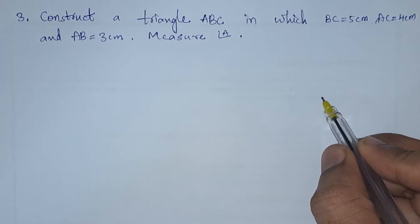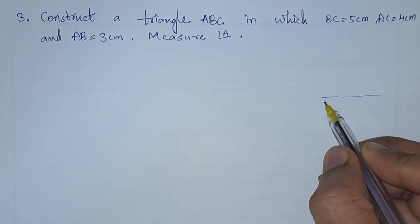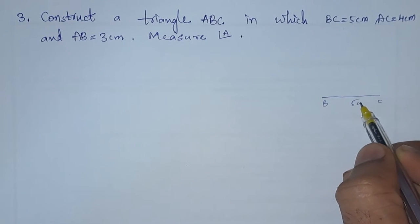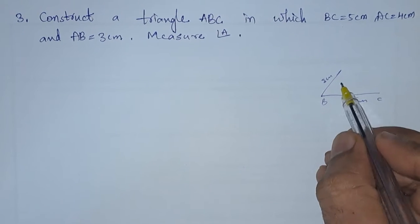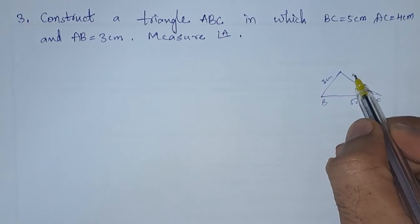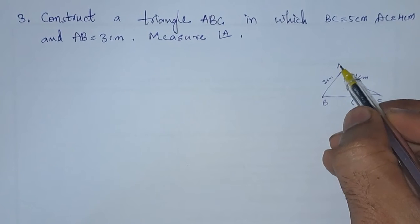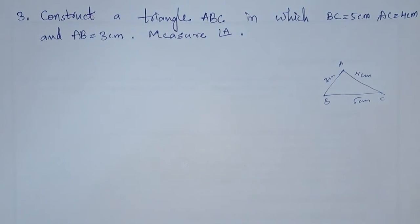Let us draw a rough diagram. They are asking us to draw a triangle. Let this be BC, 5 centimeters, and let this be 3 centimeters. Next, we will get 4 centimeters. This is the triangle and we need to measure angle A.